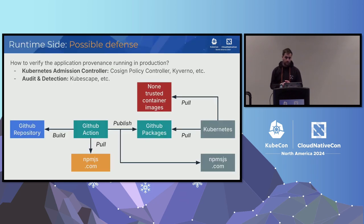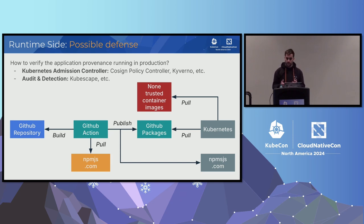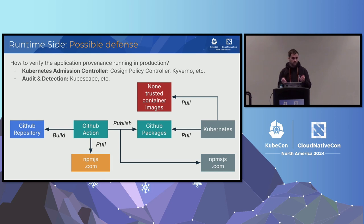Now let's talk about the runtime side. On the runtime side, we want to answer: how to verify the application provenance running in production. We are going to put in place two things. The first is a Kubernetes admission controller to deny or allow any images running on our cluster — you can use Cosign Policy Controller or Kyverno. But before blocking anything, it can be good to have an audit and detect what you are already running using Kubescape. We want to protect against usage of non-trusted container images inside our Kubernetes cluster.